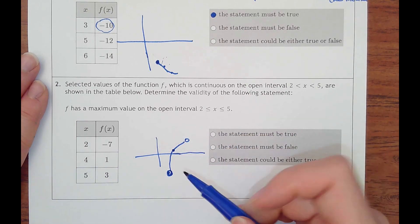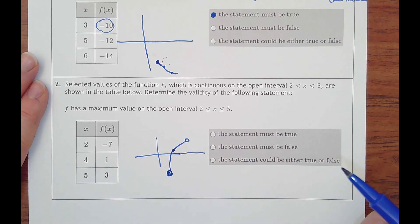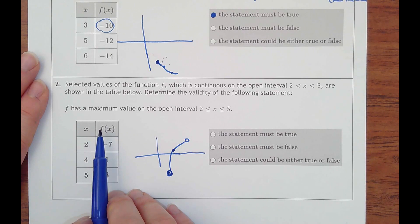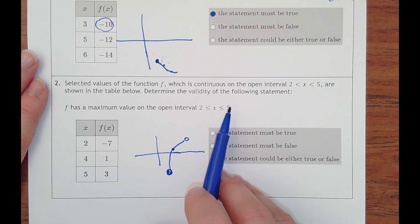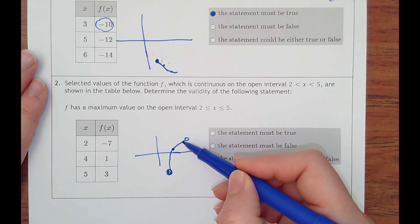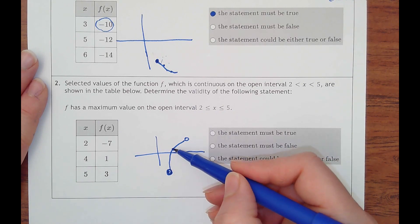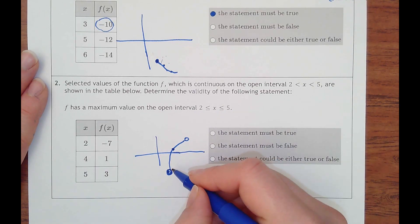It doesn't tell us that the slope is always increasing, but it says it has a maximum value on the open interval. Not necessarily. Even right now I don't have a max, just how I drew it. I have no hill.